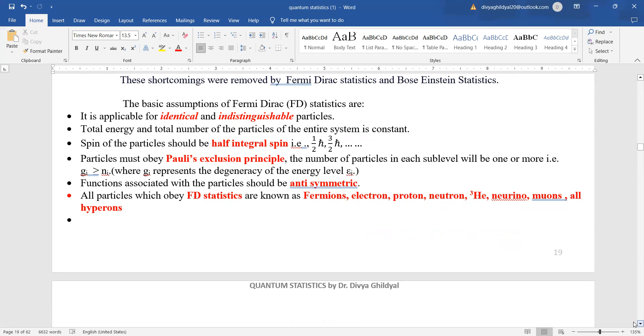The particles must obey Pauli's exclusion principle. All particles which are going to obey the Fermi Dirac statistics are known as Fermions. Examples: electron, proton, neutron, etc.